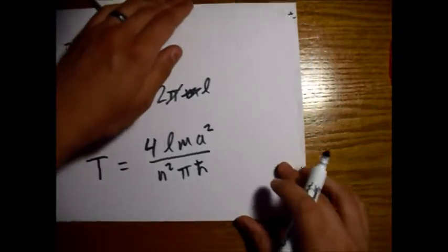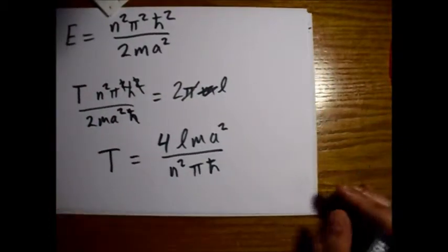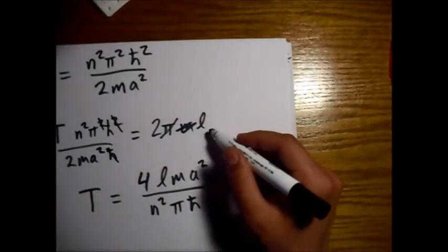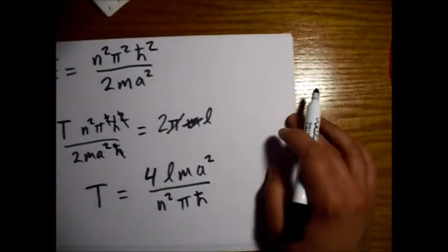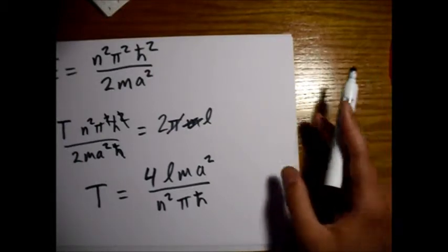So an l m a squared over an n squared, then we have one pi left and we have one h bar left. I'm going to check this with Griffiths real quick: 4lm a squared over pi h bar. Okay, so now we're going to deal with these integers.